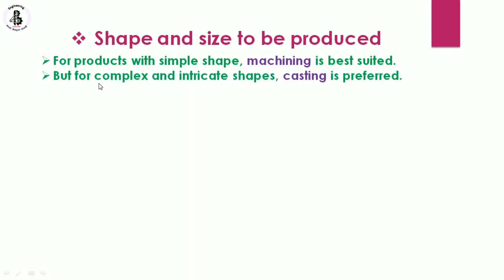For complex and integrated shapes, casting is preferred. Casting is a fundamental manufacturing process used to produce complex and integrated shapes. Such shapes are difficult to machine, which is why casting is the most preferred methodology in those cases.